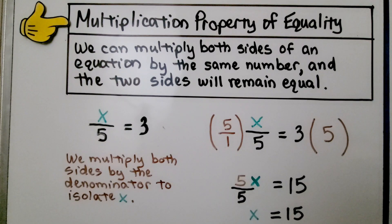The multiplication property of equality says we can multiply both sides of an equation by the same number and the two sides will remain equal.